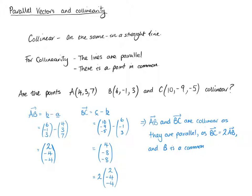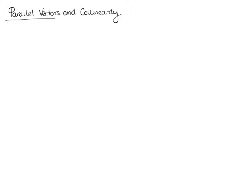So that's just saying they're all in a straight line. That's what collinearity is. So I'm going to do another example. Another way that parallel vectors and collinearity questions can be phrased is that they can ask you to prove whether or not the points are collinear.